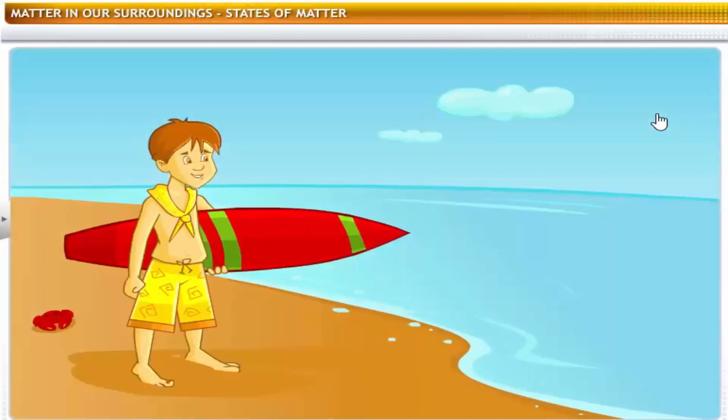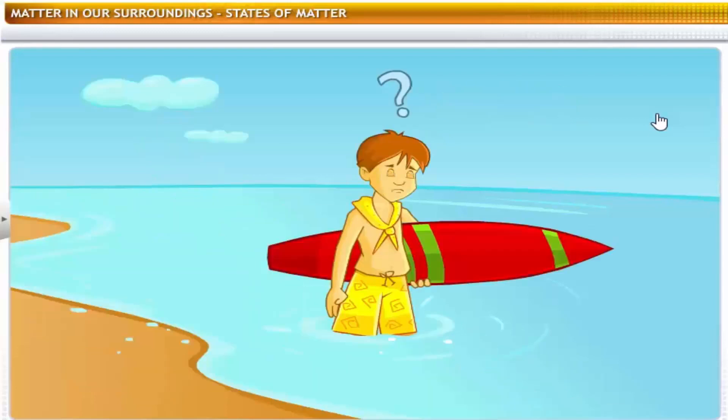Why can't you walk on water, just like you did on the snow? You can't walk on water because it is a liquid, and liquids do not have definite shapes.